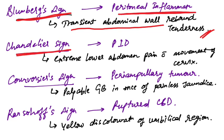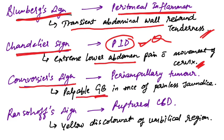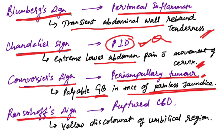Chandelier sign is extreme lower abdominal pain with movement of the cervix, found in PID (pelvic inflammatory disease). Courvoisier's sign is a palpable gallbladder in the presence of painless jaundice, seen in periampullary tumors. Ransohoff's sign is due to ruptured CBD and shows yellow discoloration of the umbilical region.